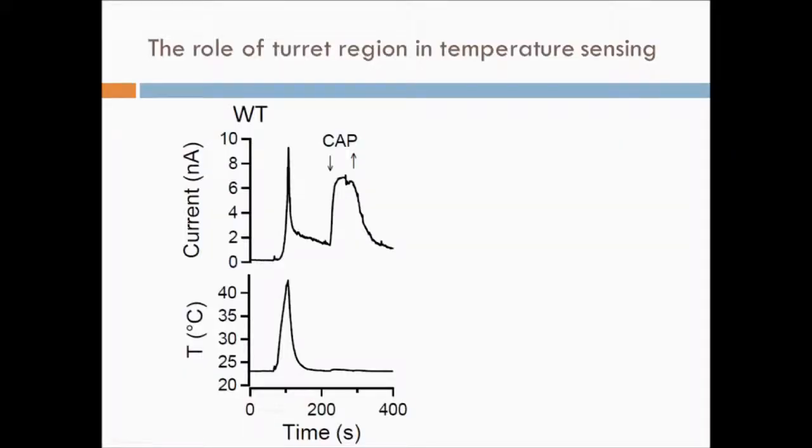TRPV1 is highly temperature sensitive and serves as a cellular heat sensor. Here, as the experimental temperature increases, the channel opens rapidly. TRPV1 can also be strongly activated by capsaicin, the compound that gives chili pepper its spiciness. Our study aims to understand how thermal energy drives TRPV1 activation.